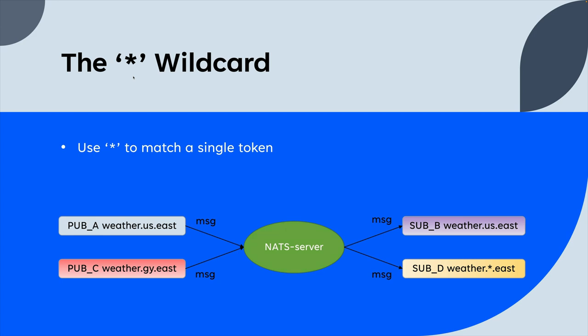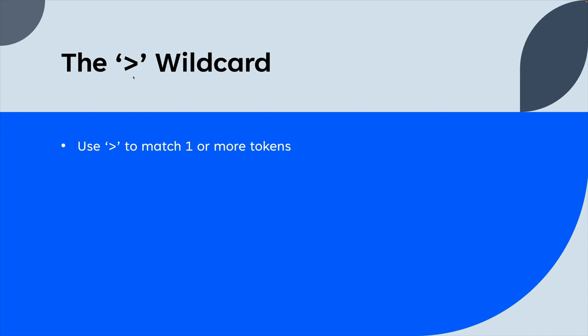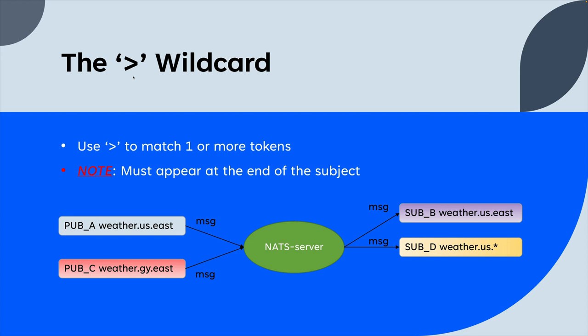So the star matches one and only one token. In this example we're using it to match the middle token: anything that starts with 'weather', any single country token, and then must end with 'east'. I'll post the link to the documentation for that, so please read it if I haven't made it clear enough. There is another wildcard token: the greater-than symbol, and this one matches one or more tokens. There's a caveat: the wildcard must appear at the end of the subject name.